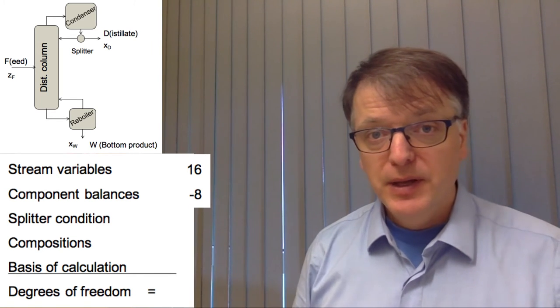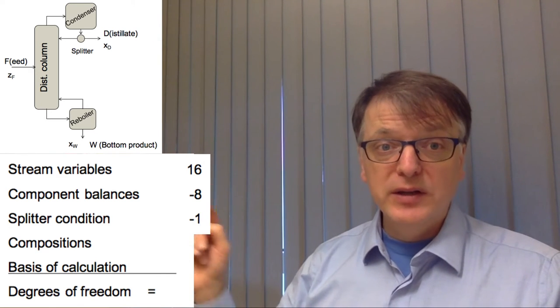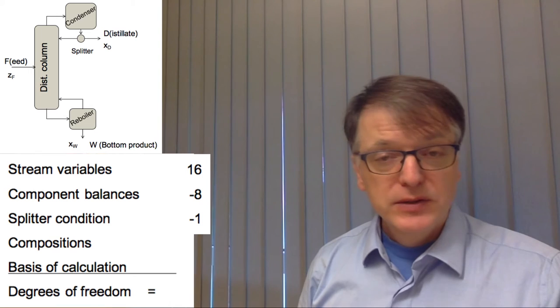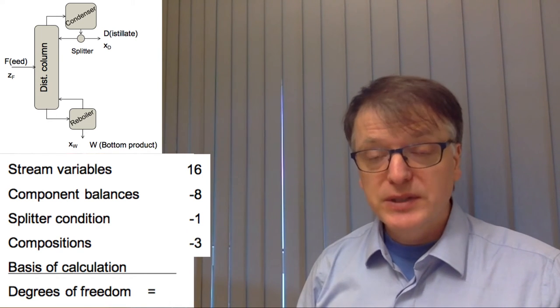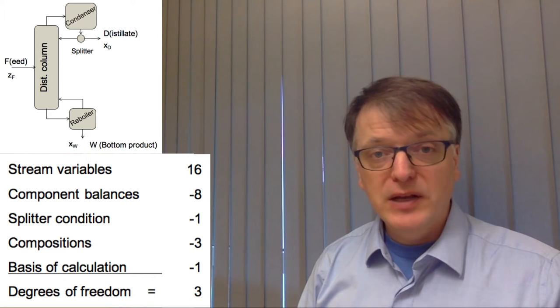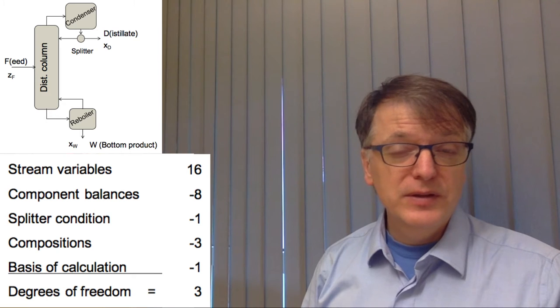You have a splitter. And if you think through how splitters work, you can realize that it's only one splitter condition. So that's one known as well. And then you have the three compositions. And then you add the basis of calculation. And you're left with three different degrees of freedom.